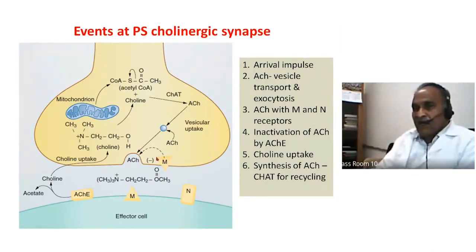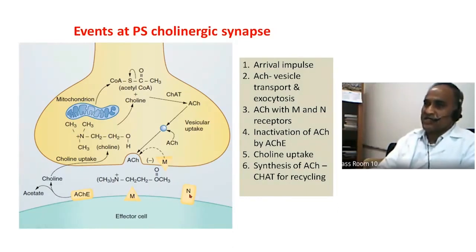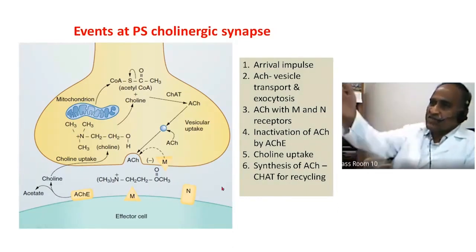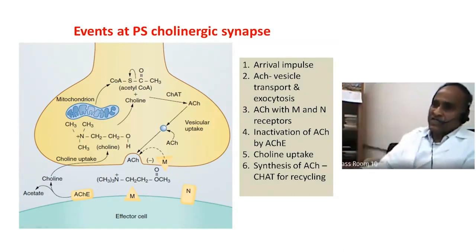I have shown one autoreceptor located on the presynaptic terminal — the M-receptor here is a muscarinic receptor, and this is an autoreceptor.